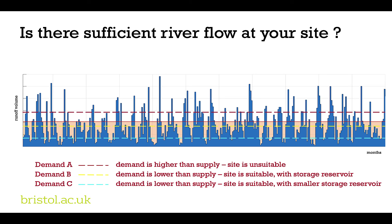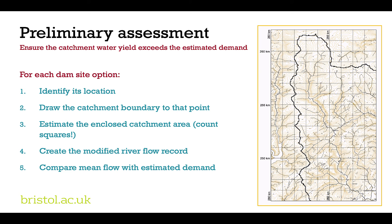In order to do this analysis for your individual dam site options, you need to do a preliminary assessment at each site. First, identify the location of your dam site option. Then draw the catchment boundary of the catchment that contributes water to the river at that point, and estimate the enclosed catchment area — you can do that by counting squares or by using the PowerPoint template with the accompanying video. Then use this to create a modified synthetic river flow record specific to your dam site, and compare the mean flow of that synthetic record with the estimated demand to determine whether it would be feasible to supply water from a dam at that location.